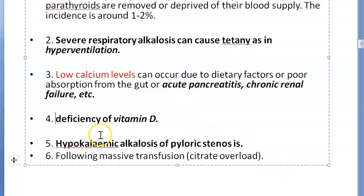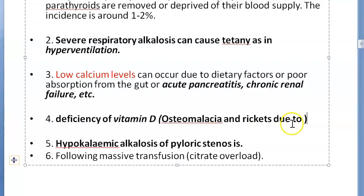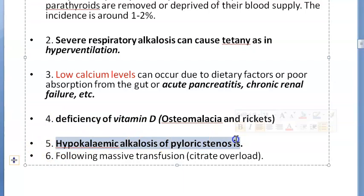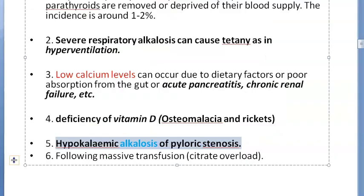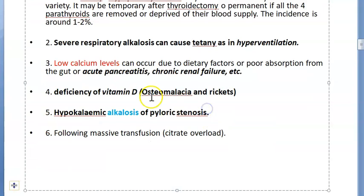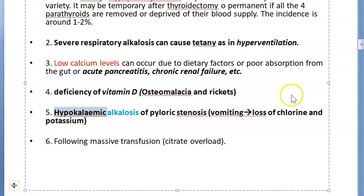Hypokalemic alkalosis of pyloric stenosis can also cause tetany — this is gastric tetany. In pyloric stenosis there is vomiting, leading to loss of chlorine (hypochloremia) and loss of H+ ions, which leads to alkalosis, then hypocalcemia, and ultimately tetany.